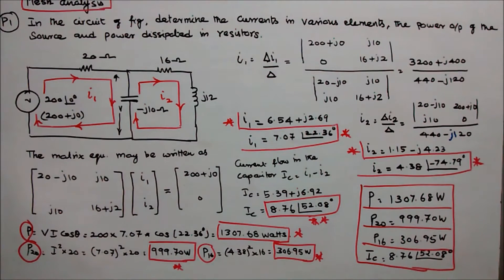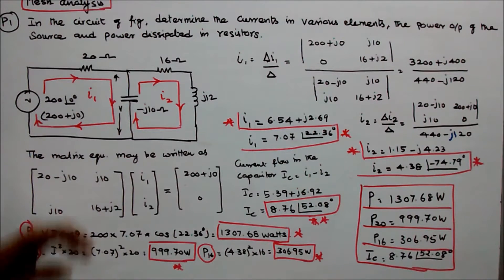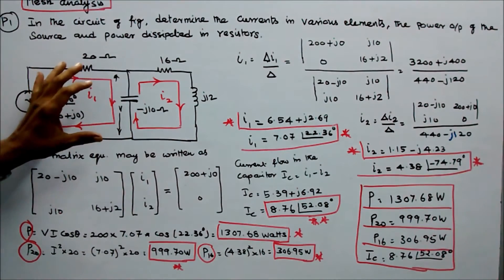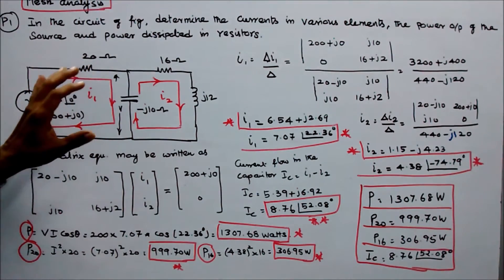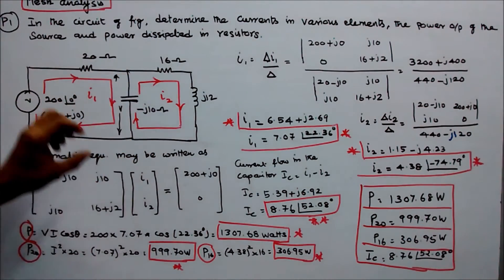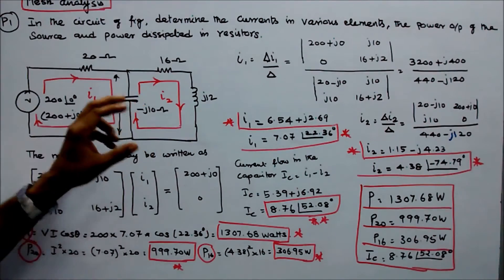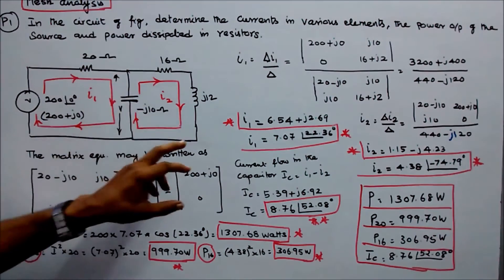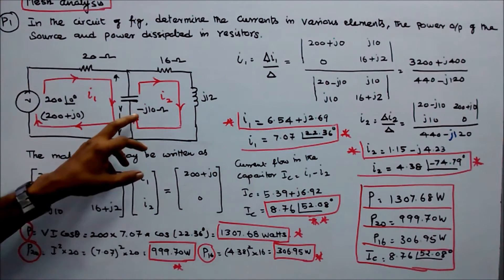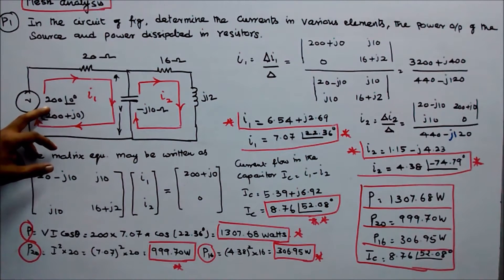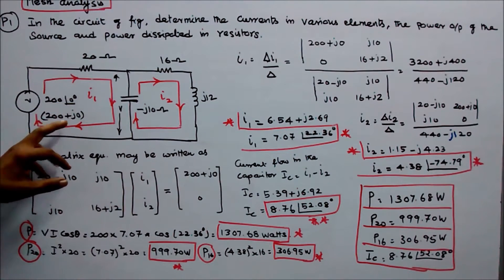In this class we work out five problems using mesh analysis. Problem number one: in the circuit shown, determine the currents in various elements, the power output of the source, and power dissipated in resistors. The circuit consists of two resistors — 20 ohm and 16 ohm — one inductive reactance j12 ohm, one capacitive reactance minus j10 ohms, and the source voltage is 200 angle zero (200 + j0).